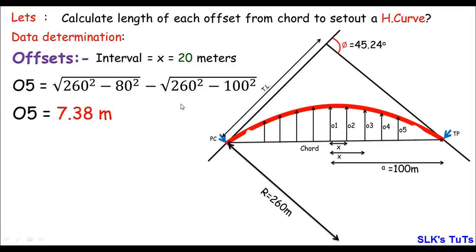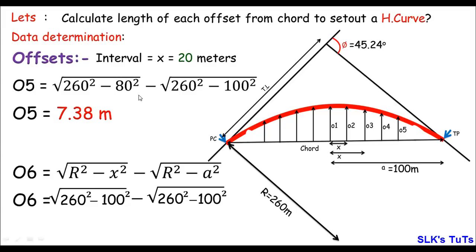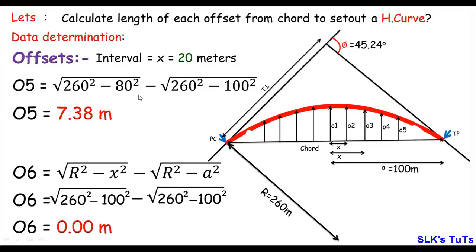Offset 6 would have x = 100 meters (80 + 20), giving O6 = √(260² − 100²) − √(260² − 100²) = 0.0 meters. This confirms there is no sixth offset — we only have 5 offsets per side. When the offset value becomes 0, it means we have reached the end of the curve.